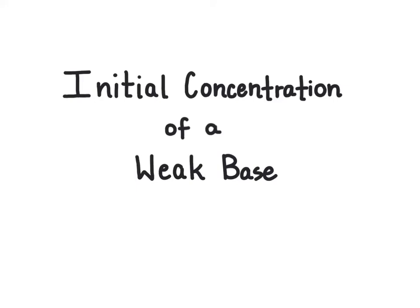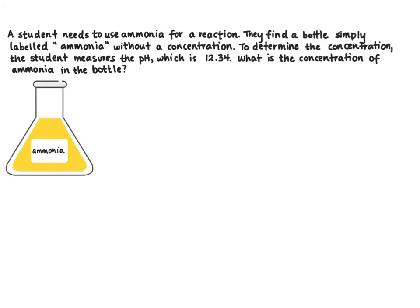In this video we're going to look through an example of how to find the initial concentration of a base if the pH and the Kb values are known. A student needs to use ammonia for a reaction. They find a bottle simply labeled ammonia without a concentration. To determine the concentration the student measures the pH which is 12.34. What is the concentration of ammonia in the bottle?